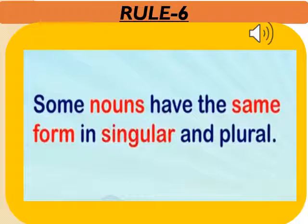We will be continuing with the rules covering the irregular forms of plural nouns. Rule number 6: some nouns have the same form in singular and plural. It means they remain the same in both forms, whether it is plural or singular.